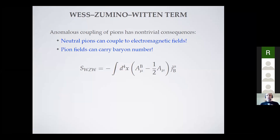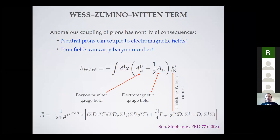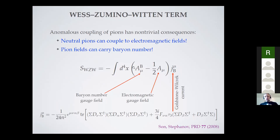What is perhaps less known is that the anomaly can also make mesons carry baryon number. This is not so mysterious to those familiar with the Skyrme model. In the effective theory this is implemented via a topological current called the Goldstone-Wilczek current, which is identically conserved and couples to the electromagnetic gauge field and an external source for baryon number — the baryon number gauge field. This combination is fixed by the Gell-Mann–Nishijima relation.